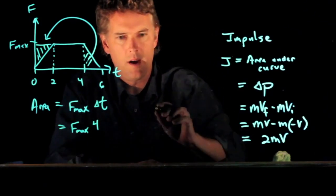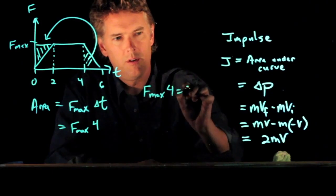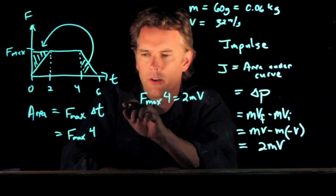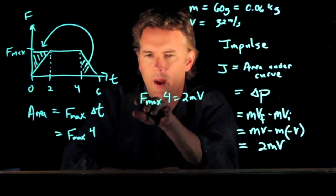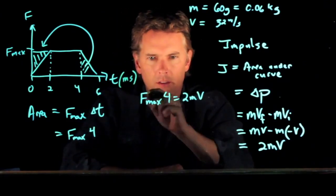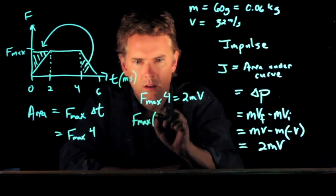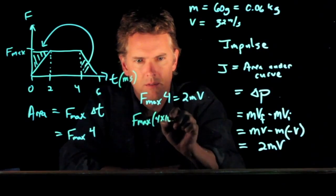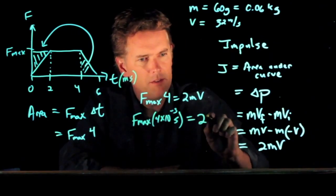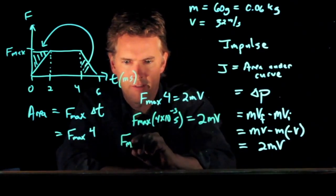2mV is equal to F_max times 4. So we just calculated that the area under the curve was equal to F_max times 4. If you look at the units here, this is milliseconds. So this should be 4 times 10 to the minus 3 seconds. And that's equal to this, twice times the mass times the speed V. And so now we can solve this for F_max.